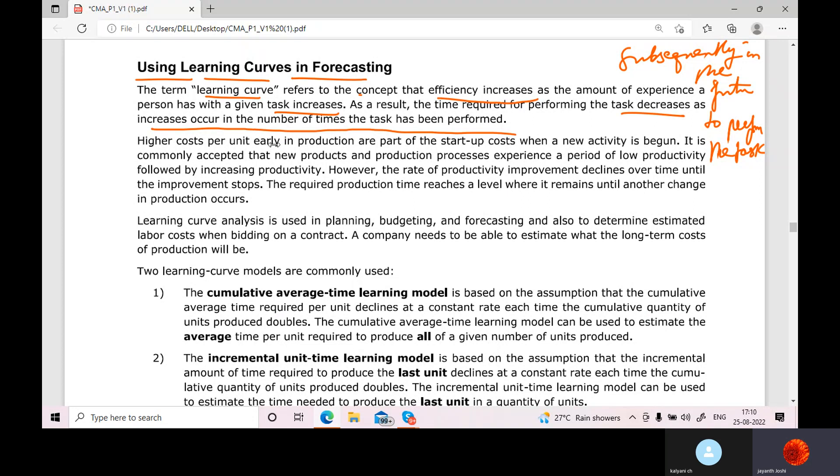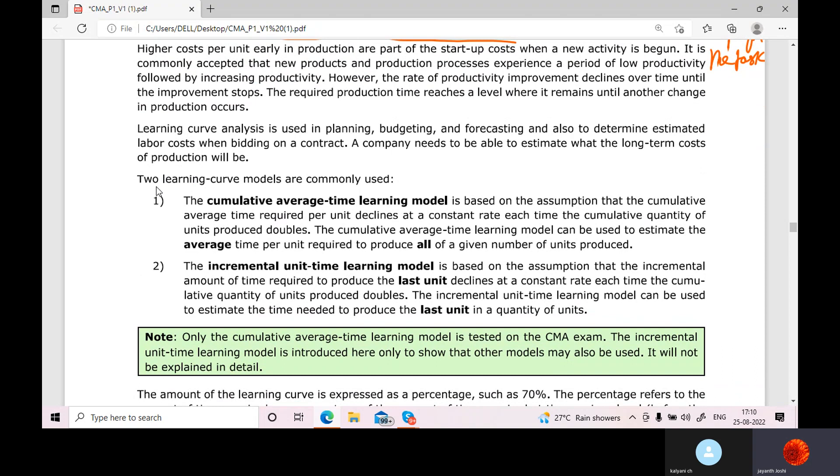When you perform some task with more efficiency, you save time and you save cost also. Because less wastage and more improvement in the productivity is also seen. Now, the two learning curve models are commonly used. One is cumulative average time learning model. When I speak about cumulative, it's one, two, three. If I want to say the cumulative: one, one plus two is three, two plus three is six. This is cumulative. That means when you move the next step, you take the previous count also. Previous number also.